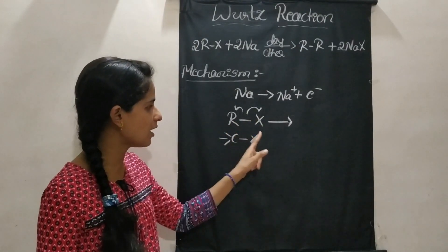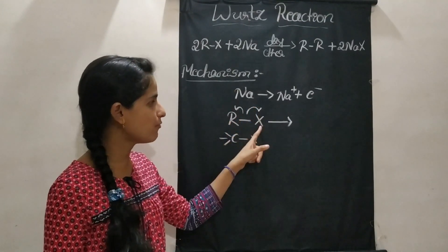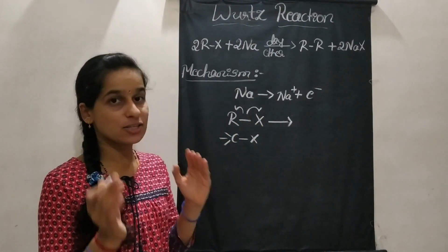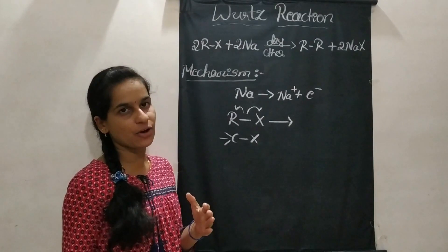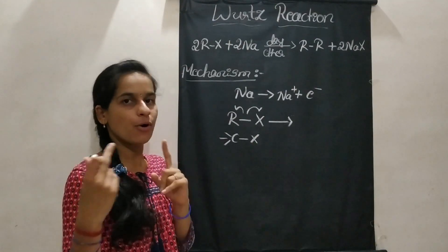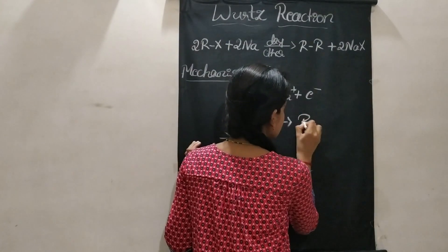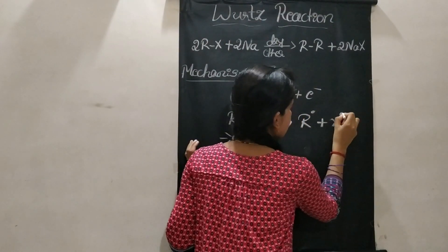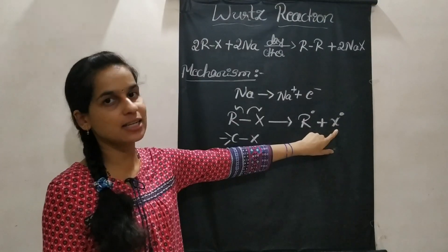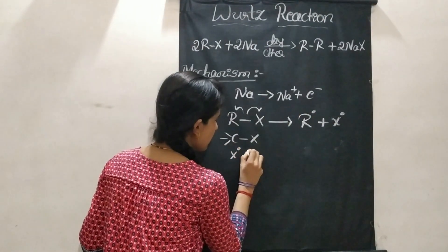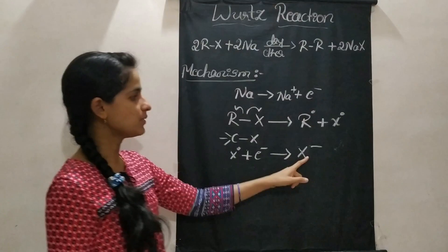When this electron is donated to the halogen atom of the alkyl halide, there is homolytic fission between the carbon and halogen atom. In homolytic fission, both fragments get one electron each, forming free radicals - an alkyl free radical (R·) and a halogen free radical (X·). In heterolytic fission, both bonding electrons go to one fragment forming ions. Here, the halogen free radical accepts an electron from the sodium atom and becomes X- ion.